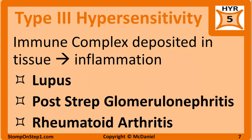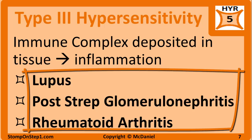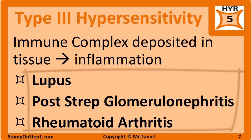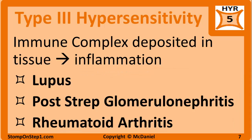High yield correlations with type 3 hypersensitivity include lupus, post-streptococcal glomerulonephritis, and rheumatoid arthritis — all of which have components of disease driven by immune complexes.